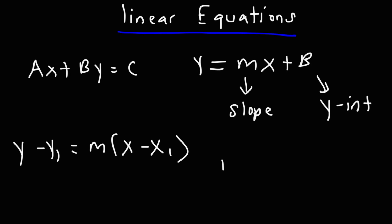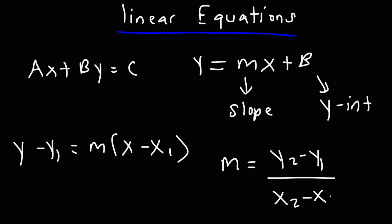To calculate the slope between two points, it's the change in y — y2 minus y1 — divided by the change in x. So it's rise over run.